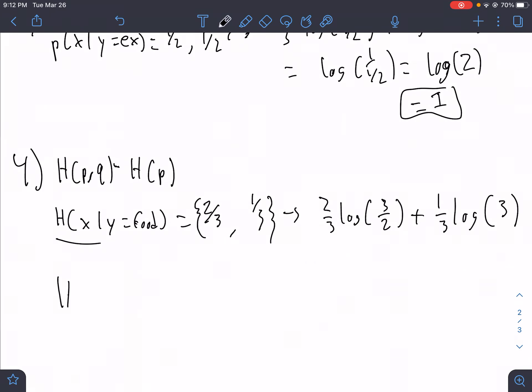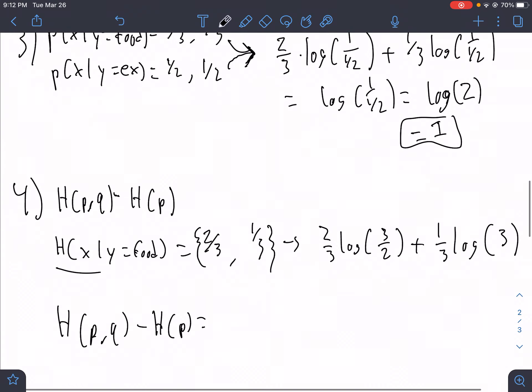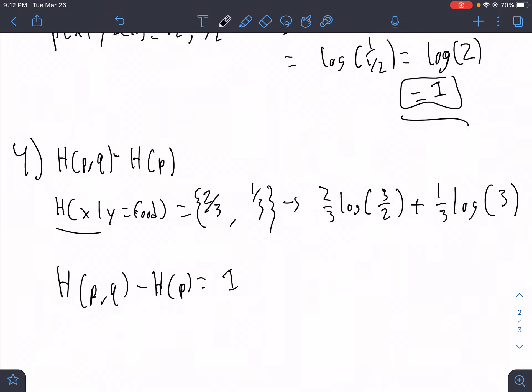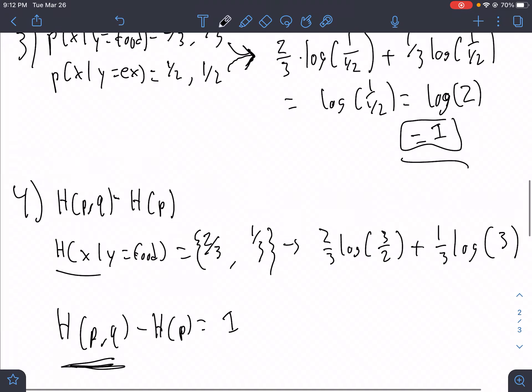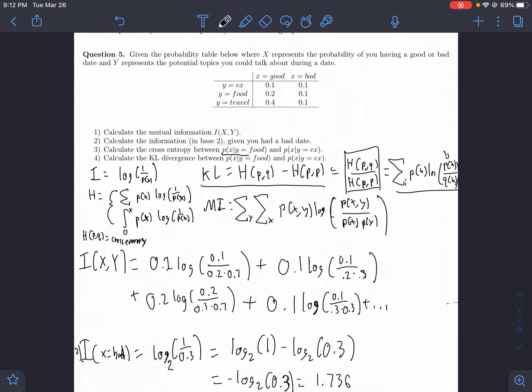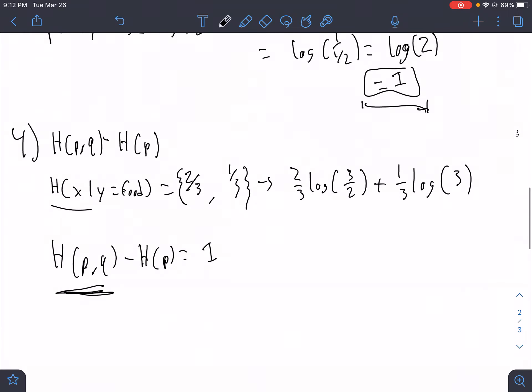So then we do H of P comma Q minus H of P. And that is equivalent to... Our cross-entropy last time was one, right? So if we just put that in, because H of P, Q is the cross-entropy that we found earlier. And these are the same variables, I believe. So all we do is we have whatever answer we got here, which is one.